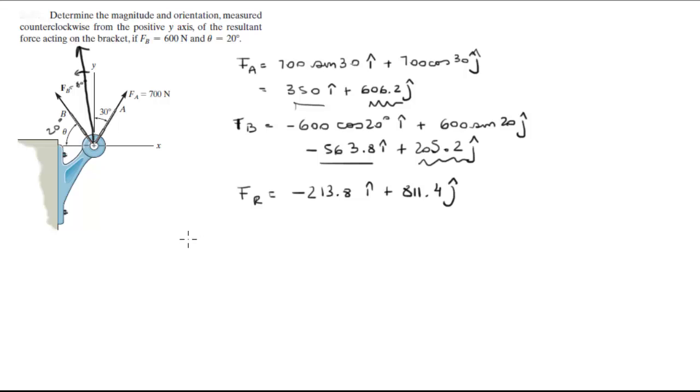You gotta convert this to polar form. To find the magnitude you do the square root of 213.8 squared plus 811.4 squared, and when you solve this you get that this is 839.1. And to find the angle you do the tangent inverse of the y component over the x component.